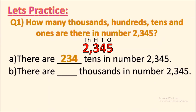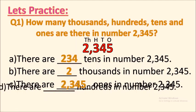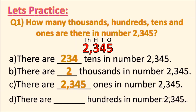There are how many thousands in number 2345? There is only one place at the thousands — that will be 2 thousands. There are how many ones in number 2345? We take the whole number, so that is 2345 ones. There are how many hundreds in number 2345? We take digits till the hundreds place — thousands and hundreds — so the answer is 23 hundreds in number 2345.